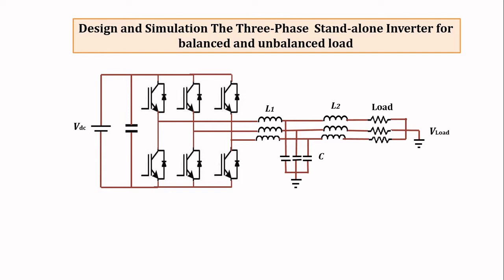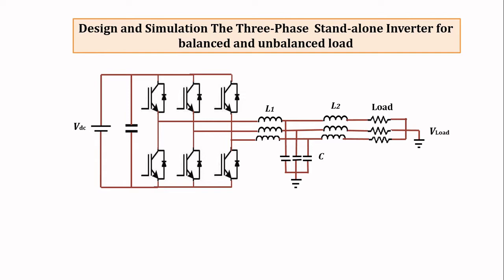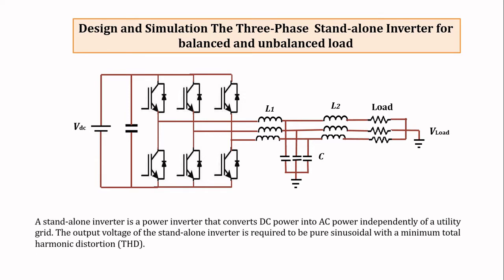This is the power circuit diagram of the 3-phase standalone inverter. A standalone inverter is a power inverter that converts DC power to AC power independently of the utility grid. The output voltage and current of this inverter is required to be pure sinusoidal with minimum THD.